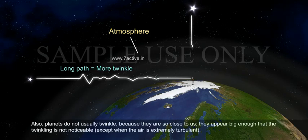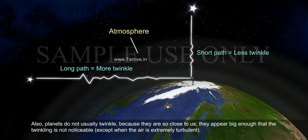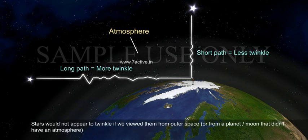Planets do not usually twinkle because they are so close to us. They appear big enough that the twinkling is not noticeable, except when the air is extremely turbulent. Stars would not appear to twinkle if we viewed them from outer space or from a planet or moon that didn't have an atmosphere.